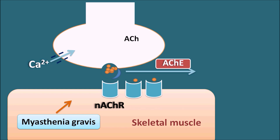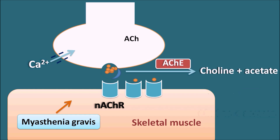The acetylcholinesterase enzyme cleaves acetylcholine into choline plus acetate, which terminates the action of acetylcholine. So in a patient with myasthenia gravis, there is little chance of binding of acetylcholine to the acetylcholine receptors, thereby muscle strength is decreased, resulting in muscle weakness.